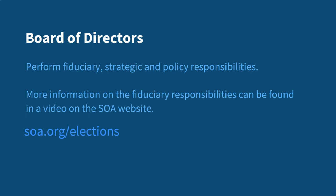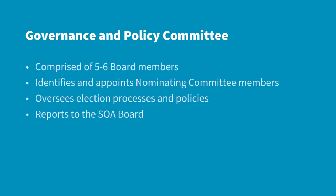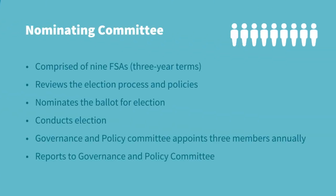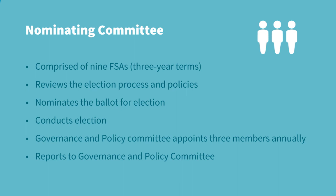Specifically regarding elections, there are two committees that are heavily involved. One is the Governance and Policy Committee, which oversees many things including elections. It's comprised of five to six board members and identifies and appoints the nominating committee members. The Governance and Policy Committee, or GOPO, has oversight for the election processes and policies and reports directly to the SOA board. The nominating committee is comprised of nine fellows, and they each serve a three-year term. They review the election process and policies annually, nominate the ballot of candidates in accordance with SOA policies, conduct the annual election, and report to the Governance and Policy Committee. Three new committee members are appointed every fall.